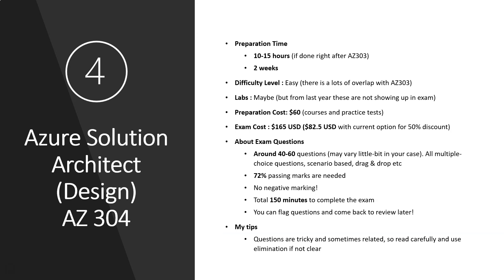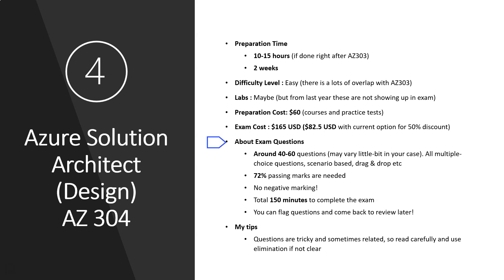The final step is Azure Solution Architect Design, AZ-304. As mentioned, AZ-303 and AZ-304 have a lot of overlap, so after doing AZ-303 this exam will feel much easier. Preparation time is 10 to 15 hours, and you can finish in even less if done right after AZ-303. I consider the difficulty level easy due to the overlap. Labs may or may not be present — same situation as AZ-303. Preparation cost is around $60 since you need fewer practice tests, and exam cost is $165 with the same 50% Azure Cloud Challenge discount available.